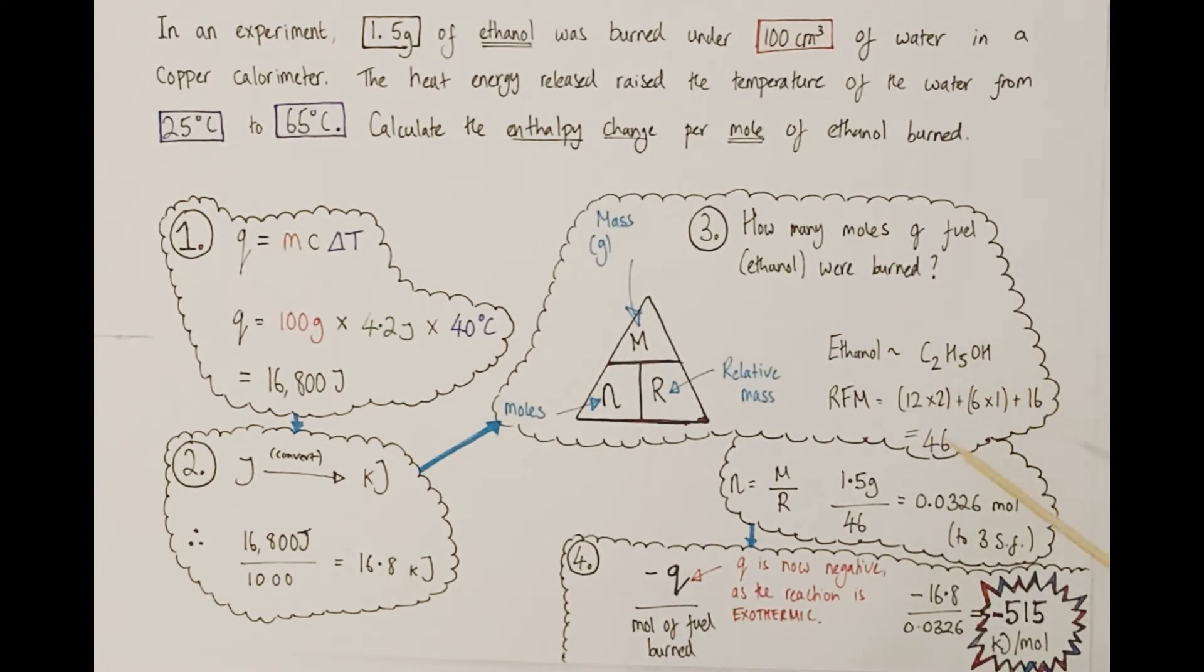I've got two carbons, six hydrogens, and an oxygen. So that's 12 times two for the two carbons, six times one for the six hydrogens, plus 16 for the oxygen. The relative formula mass of the entire formula unit is 46. That's my R, my relative mass. The mass of the fuel was given to me in the question as 1.5 grams. So I do moles equals mass divided by relative mass, 1.5 grams divided by 46. We have a tiny amount of ethanol present, 0.0326 moles to three significant figures.